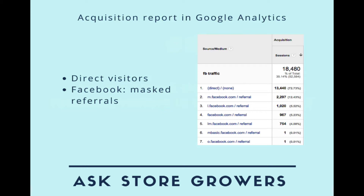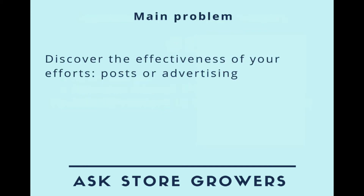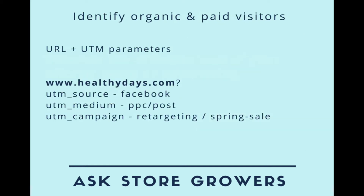That's what we're going to answer in this video. Our main problem is that we need to discover the effectiveness of our efforts, whether we're creating posts on our page or running advertising campaigns. We need to somehow identify the organic from the paid visitors. To do that, we take the URL that we would post on Facebook and we add a couple of parameters — they're called UTM parameters. They tell Google Analytics which campaign, or which part of which campaign, they should categorize this under.